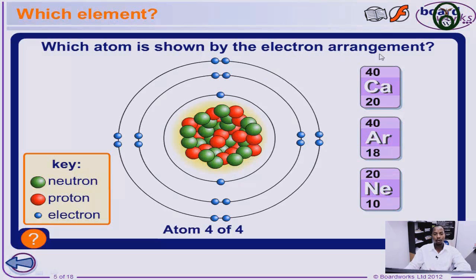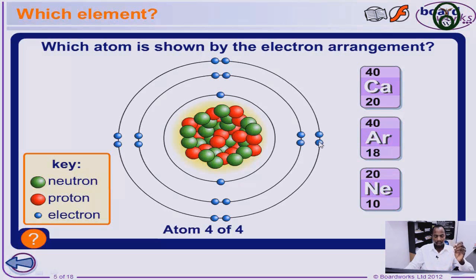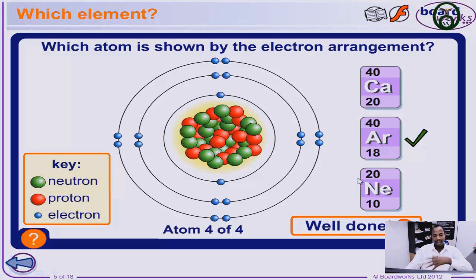Looking at this electron arrangement — which atom is shown? The first shell has the maximum of two electrons, and the second one has eight. So two plus eight is ten. Then the next shell has: one, two, three, four, five, six, seven, eight. So two plus eight plus eight equals eighteen. Which atom is that? Argon — atomic number 18. This is how electrons are arranged in the shell or orbit: the first is 2, maximum; the next is 8; and 8 subsequently.